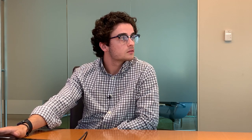Volume was elevated in after hours on day one. I waited for the stock to come up to the previous resistance level at 545, looked for failure on the tape, and for the chart to hold below that breakout level. I shorted any pops into the open. Since Netflix is a market stock, I was also paying attention to the QQQs and SPY along with ADD and TICK.